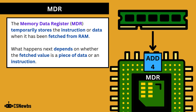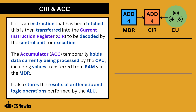The memory data register (MDR) temporarily stores the instruction or data when it has been fetched from RAM. What happens next depends on whether that fetched value is a piece of data or an instruction. If it is an instruction that has been fetched, then it is transferred into the current instruction register (CIR) to be decoded by the control unit for execution.